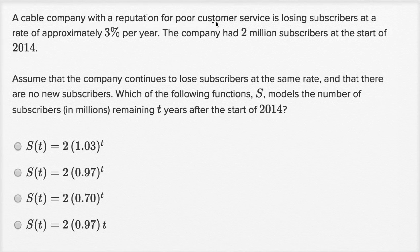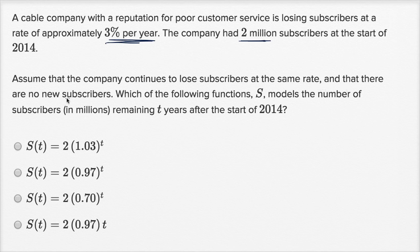A cable company with a reputation for poor customer service is losing subscribers at a rate of approximately three percent per year. The company had two million subscribers at the start of 2014. Assume that the company continues to lose subscribers at the same rate, and that there are no new subscribers. Which of the following functions S models the number of subscribers in millions remaining T years after the start of 2014?